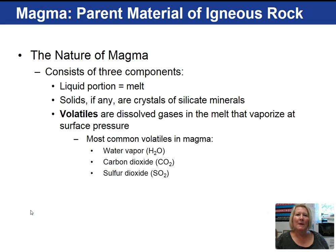Magma is made up of solids — minerals, for example — the liquid portion, and volatiles. The most common volatile is water vapor. Others include carbon dioxide and sulfur dioxide as well.